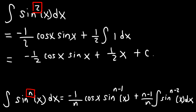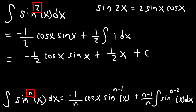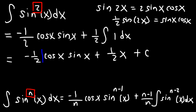You can leave your answer like this, or you can adjust it. If you wish to adjust it, you need to be familiar with the double angle formula for sine: sine 2x equals 2 sine x cosine x. So if we divide by 2, 1 half sine 2x equals sine x times cosine x.